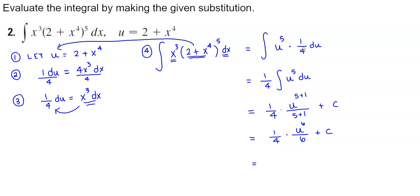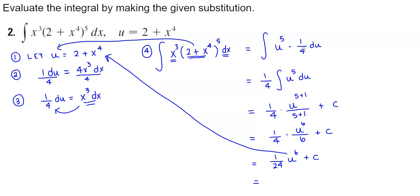Now let's multiply: 1 times u to the sixth is u to the sixth, and 4 times 6 is 24, so we have 1 over 24. Now we bring back the original substitution — u was defined as 2 plus x to the fourth — giving us a final answer of 1 over 24 times the quantity (2 plus x to the fourth) to the sixth power plus C.